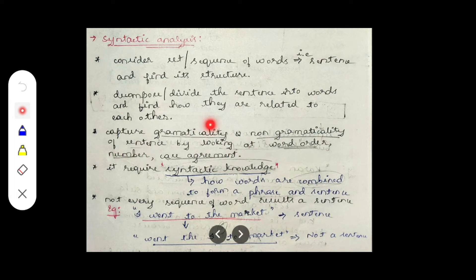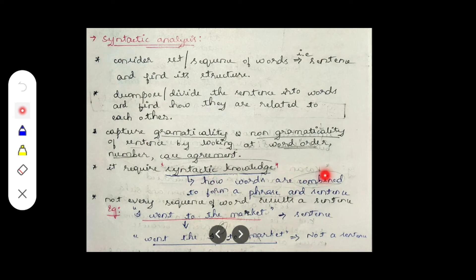These are the three things we look into to check grammaticality or non-grammaticality. Syntactic analysis requires syntactic knowledge for processing. Syntactic knowledge means how words are combined to form phrases or sentences — how words are arranged to form phrases and sentences.